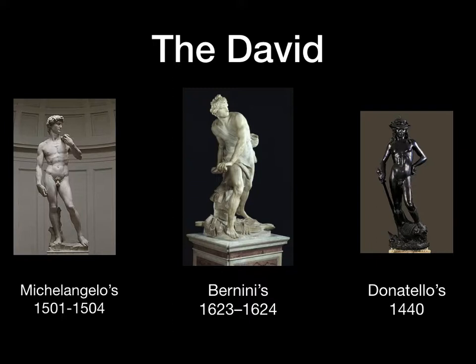It's very fitting for what happens during each artist's time period. Donatello's is after the action — he's already slain Goliath, which was made after Florence's victory over Milan. Michelangelo's David is before the battle; he's ready to fight. At the time, Florence had adopted David as their symbol, saying to everyone that they are there to defend their city. So again, it's very appropriate that he's standing there ready to fight.